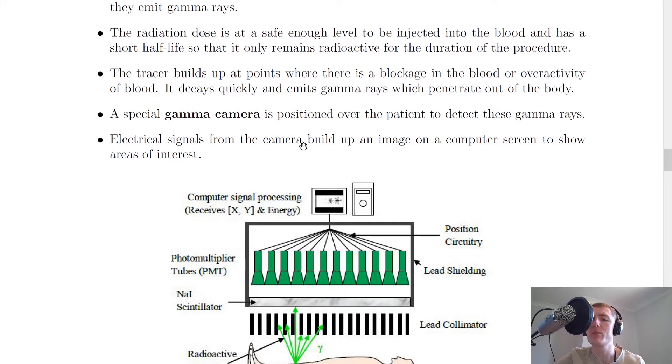A special gamma camera is positioned over the patient to detect these gamma rays, and electrical signals from the camera build up an image on a computer screen to show areas of interest. This way you should be able to see areas where there is a build-up of the tracer, and therefore areas where there might be a blockage in an artery or a cancerous tumor.